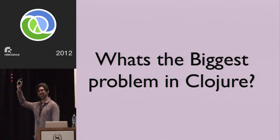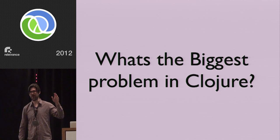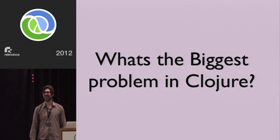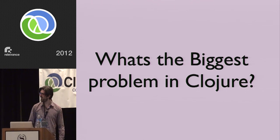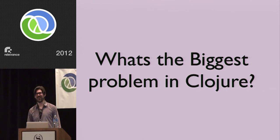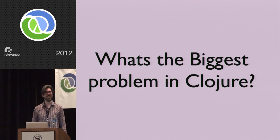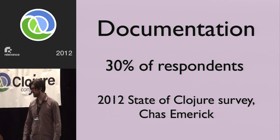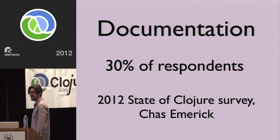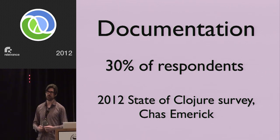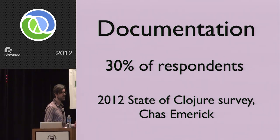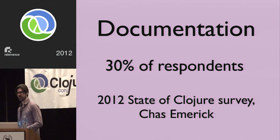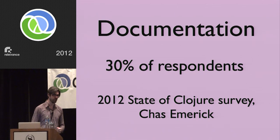What's the biggest problem in Clojure? We actually know the answer to this. The biggest problem is documentation. In the 2012 State of Clojure Survey from Chas Emmerich, 30% of people — the highest number of all possible options — said lack of documentation was the biggest thing holding them back. Obviously we have a bunch of experts here, so maybe it's not as big a problem now. Parentheses may still be a bigger problem for the people in this room.